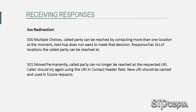301 Moved Permanently: this new URI should be cached by the caller and used in future requests. For example, if Tarzan calls Jane at camp 1 and the SIP proxies realize she is no longer available there — perhaps camp 1 is closed for good — and Jane has phones in camp 2 and camp 3, the SIP proxies could respond with 301 Moved Permanently with her new addresses in the contact header field, also encouraging Tarzan to never try camp 1 again to reach Jane.